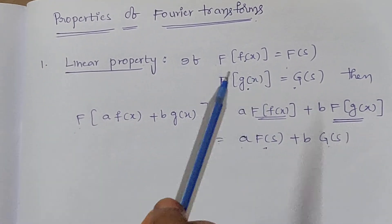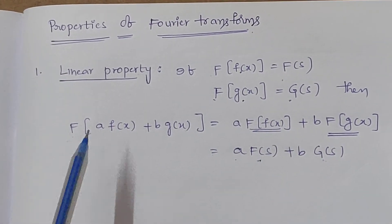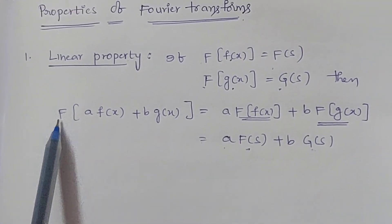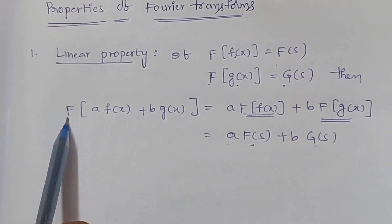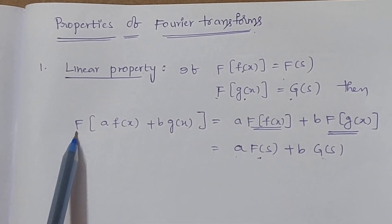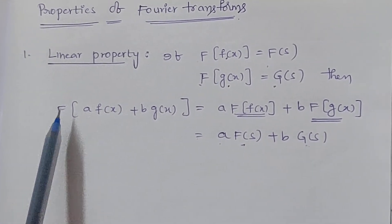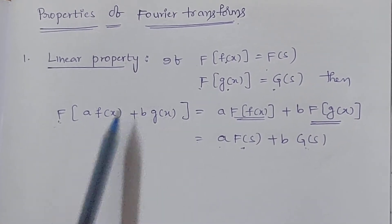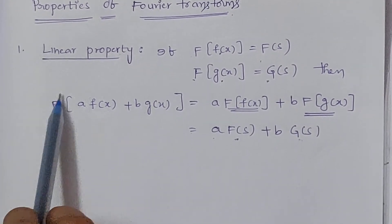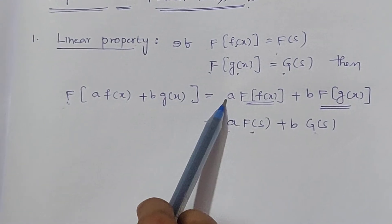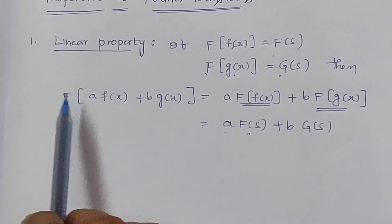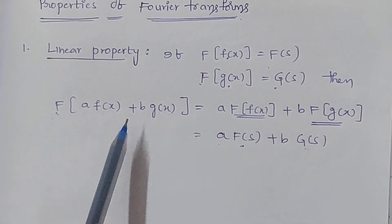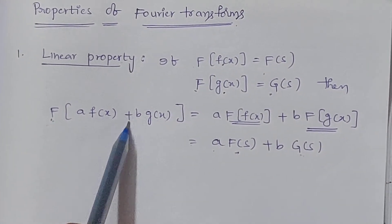Whatever the topic, the linear property states that the operator — here the operator is the Fourier transform operator, that is capital F — affects only the function, not the constant. We apply capital F on the function, not on the constant, and we get capital F applied to both expressions separated by a sum.